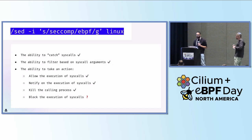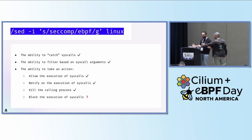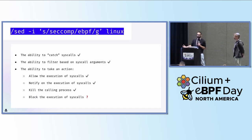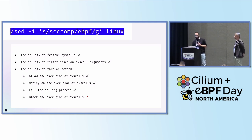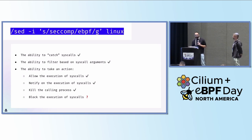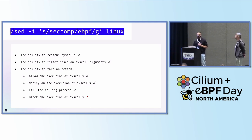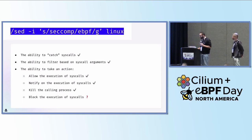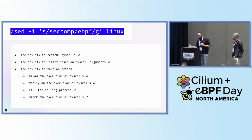So how do we replace seccomp with eBPF? We need to make sure we're able to catch system calls — quick feasibility check: yes, eBPF can do that. Can we filter based on system call arguments and capabilities? Yes, we should be able to do that with eBPF. Allowing execution — we're doing observability, not blocking anything, so that's fine. Kill the calling process — there is a BPF helper that can signal and kill a process, so we've got that covered. However, blocking the execution of system calls — that's tricky. I wasn't sure if we could do that in all environments.